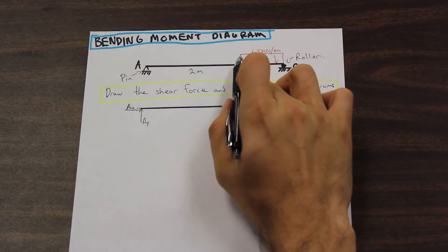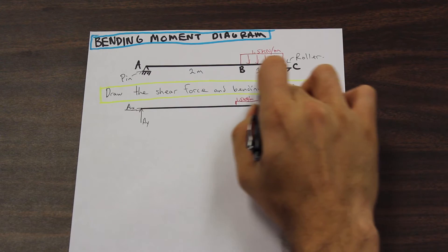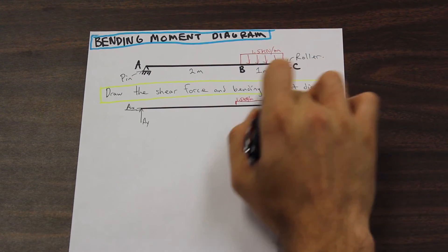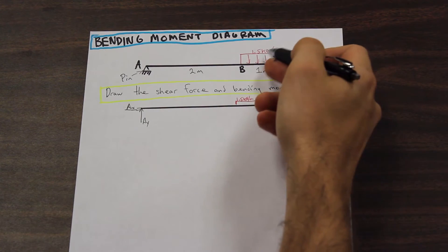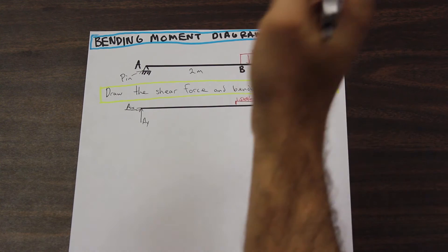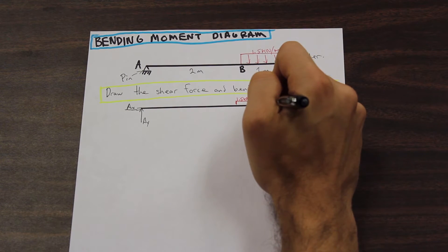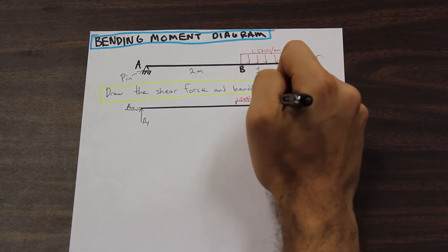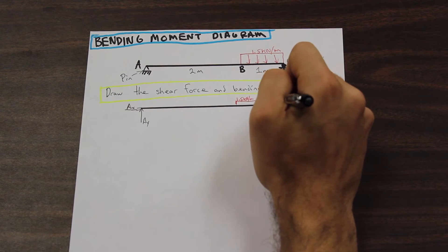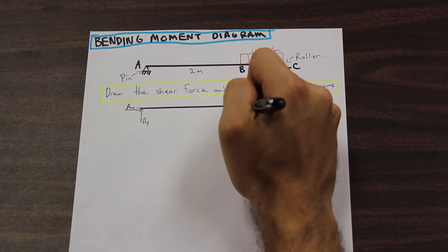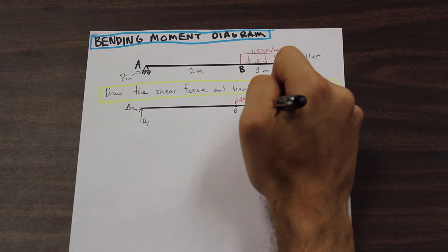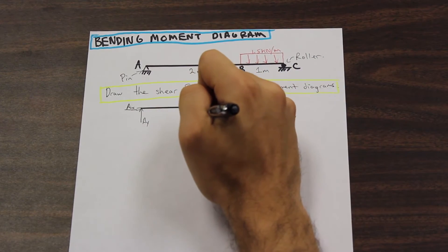So also we have to resolve the distributed load. And how we do that is we just multiply the distance that the distributed load covers times its value. So 1.5 kilonewton per meter times 1 meter. The meters are going to cancel and that is going to give us a force here of 1.5 kilonewton.